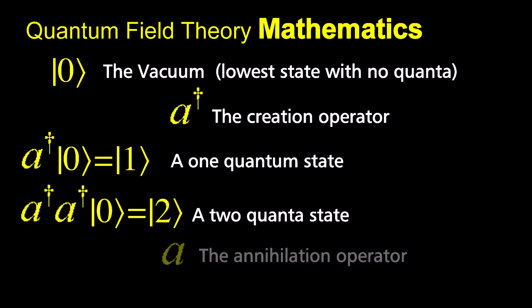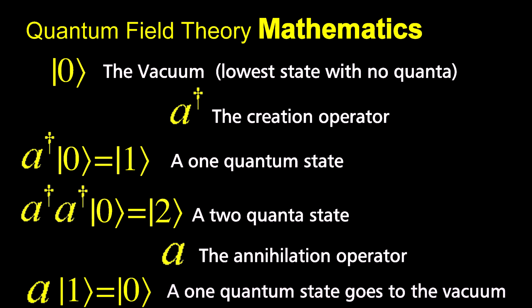The opposite of the creation operator is the annihilation operator. When it acts on a state with one quantum, you get the vacuum. The math will come by forming the fields out of combinations of creation and annihilation operators. That will guarantee that you get a theory with only integer numbers of interactions.